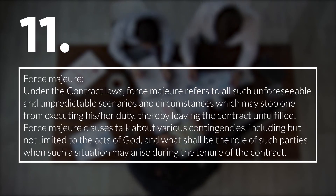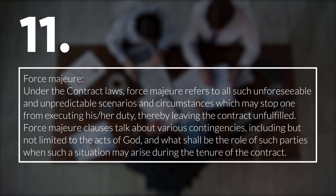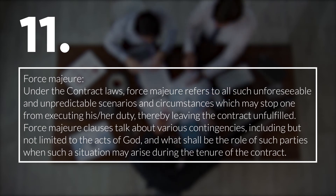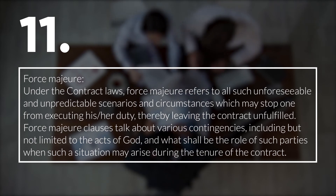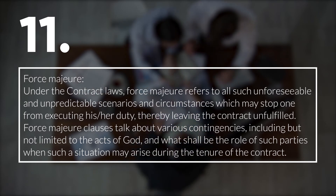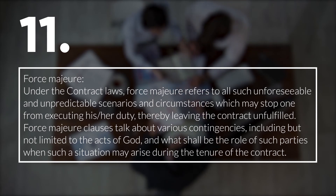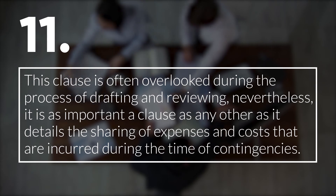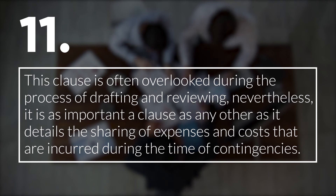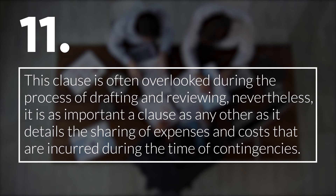11. Force Majeure. Under the contract clause, force majeure refers to all such unforeseeable and unpredictable scenarios and circumstances which may stop one from executing his or her duty, thereby leaving the contract unfulfilled. Force majeure clauses talk about various contingencies, including but not limited to the acts of God, and what shall be the role of such parties when such a situation may arise during the tenure of the contract. This is often overlooked during the process of drafting and reviewing. Nevertheless, it is as important a clause as any other, as it details the sharing of expenses and costs that are incurred during the time of contingencies.